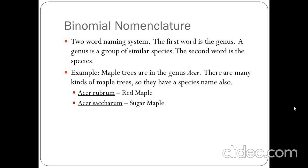Let's consider an example of the maple tree with the genus Acer. It has many species. We will see two species of the maple tree: Acer rubrum is red maple and Acer saccharum is sugar maple. The genus name is the same — Acer — but the species name is different, so these are two different species.